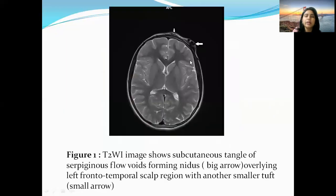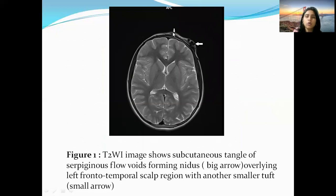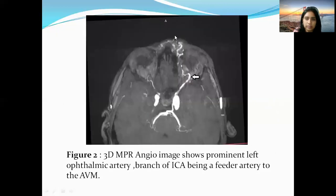MRI findings showed an ill-defined tangle of serpiginous vessels in the subcutaneous plane overlying the left frontotemporal scalp region, which is the major nidus. A smaller tuft with possible nidus formation can also be seen.